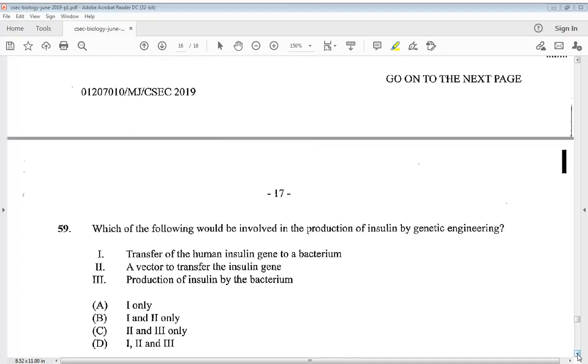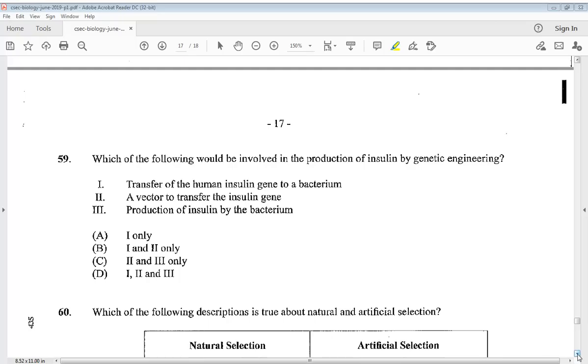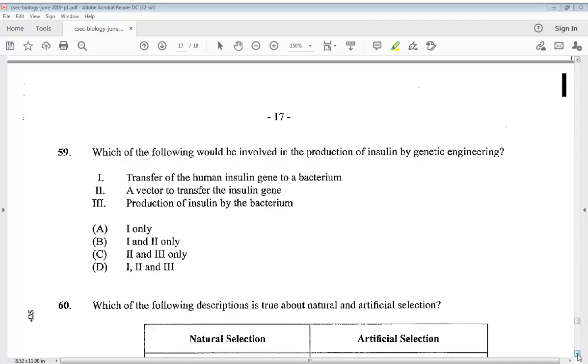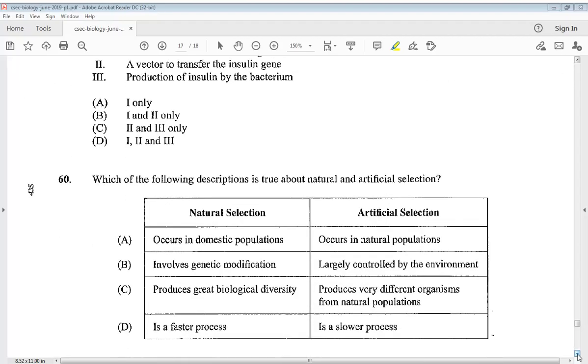Let's go to number 59. Which of the following would be involved in the production of insulin by genetic engineering? One, transfer of the human insulin gene to a bacterium. Two, a vector to transfer the insulin gene. Three, production of insulin by the bacterium. I want you to tell me the answer for this one in the comment section. Our final question says which of the following description is true about natural and artificial selection? The answer would be C: produces great biological diversity and produces very different organisms from natural populations. So there you have it, we have completed the entire CSEC Biology May June 2019 Paper 1. Thank you so much for watching.